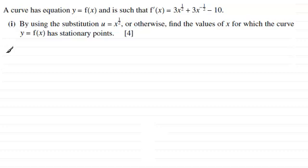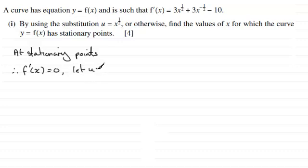So, for this part, what we should be familiar with is that at stationary points, we know that the gradient that is given by the first differential of f of x, or f dash x, f prime x, it must equal zero. So, if we were to let, as it says here, let u equal x to the power half, then hopefully this will help us solve the equation.